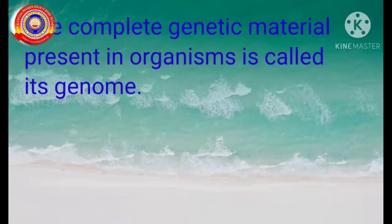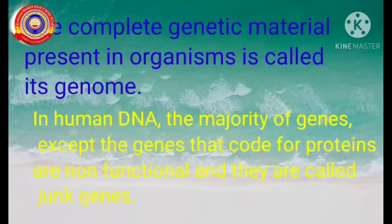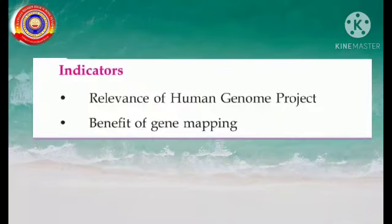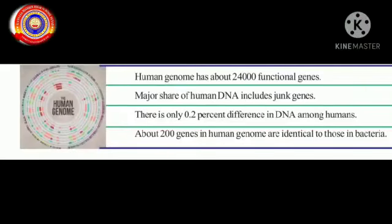In human DNA, the majority of genes, except those that code for proteins, are non-functional. They are called junk genes. The human genome has about 24,000 functional genes, while the major share of human DNA includes junk genes. There is only a 0.2% difference in DNA among humans, and about 200 genes in the human genome are identical to those found in bacteria.